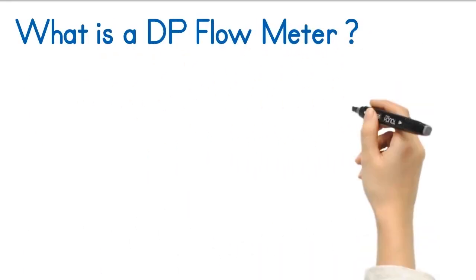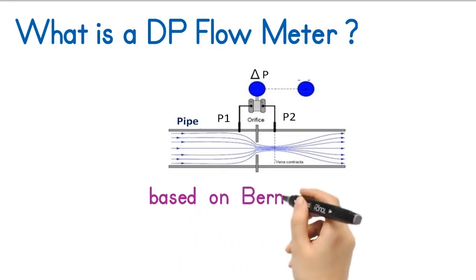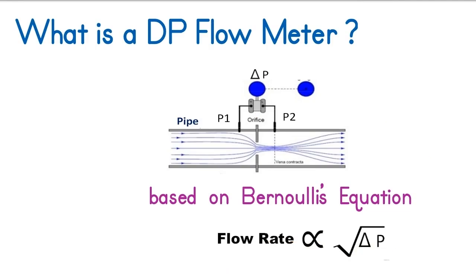What is a DP flow meter? In a DP flow meter, flow rate is calculated from measurements of the pressure difference created by the flowing fluid. The differential pressure flow meter is based on Bernoulli's equation, where the pressure drop is a squared function of the fluid velocity.